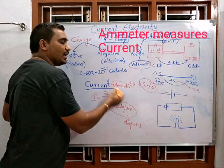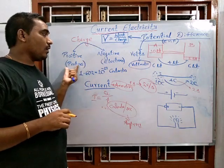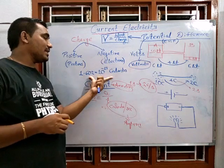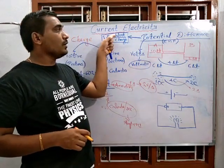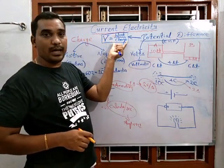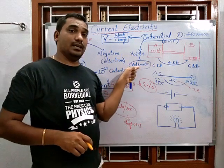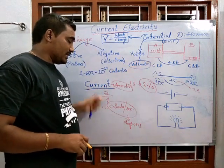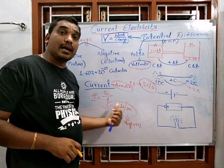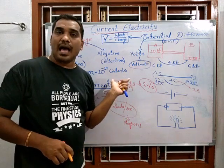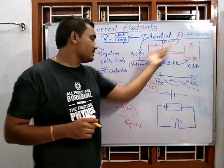To summarize: charge is of two types — positive and negative. Protons and electrons each have a charge of 1.602 × 10⁻¹⁹ coulombs. Potential difference is the work done to move a unit charge from one point to another — formula V = W/Q, unit is volts, measured by voltmeter. Current is the charge flowing per unit time, unit is amperes, measured by ammeter. Next is the relationship between potential difference and current.